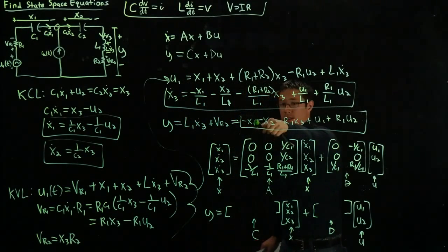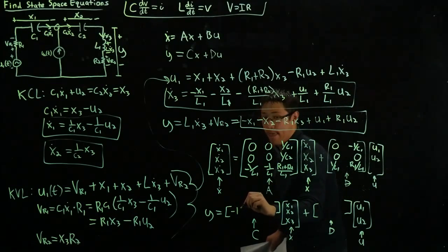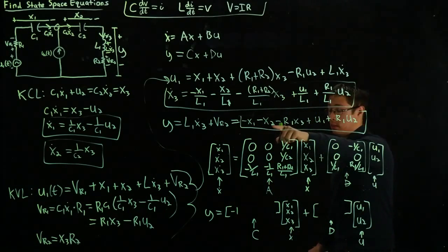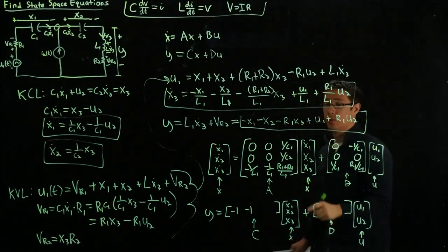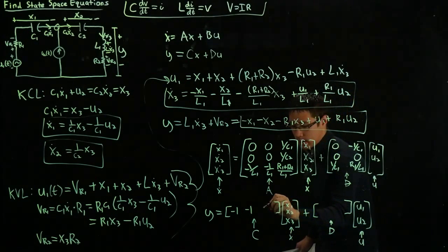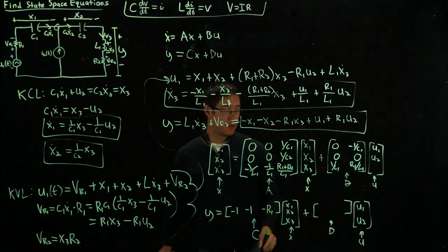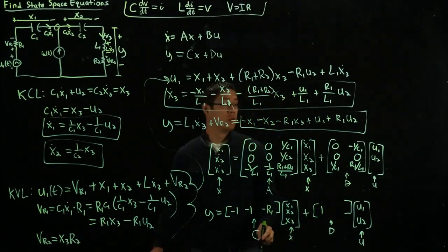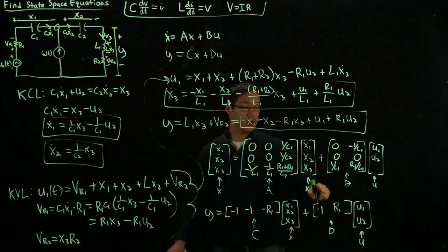Once again, we follow the same procedure as we saw last time. We have minus 1 with x1, we have minus 1 with x2, and we have minus R1 with x3. And for our inputs, we have a positive 1 for u1, and a positive R1 for u2.